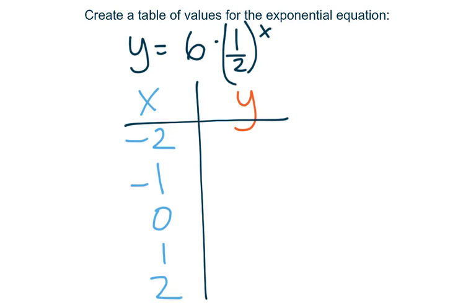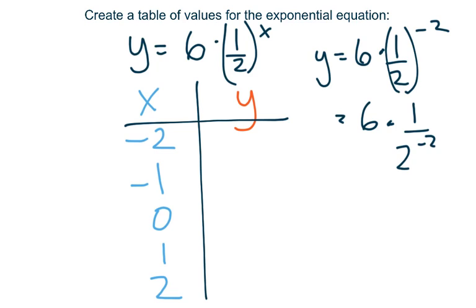y = 6·(1/2)^(-2), which equals 6 times 1 over 2 to the negative 2. That equals 6·2^2. You have to flip and bring the denominator up top because we have a negative exponent, which equals 6·4, which is 24.